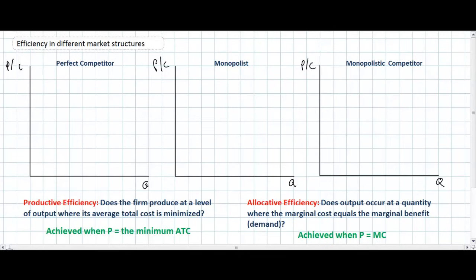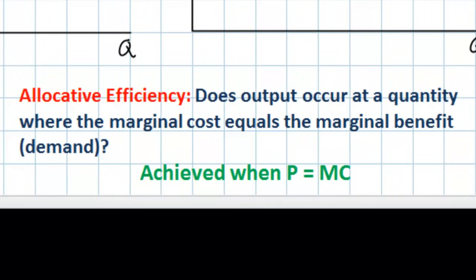The second type of efficiency is known as allocative efficiency. Allocative efficiency relates to the quantity of output in the industry and whether or not it is the socially optimal quantity. From previous units we learned that socially optimal quantity is achieved when equilibrium output occurs at the intersection of marginal cost and marginal benefit. On a firm diagram, demand represents the marginal benefit consumers receive from the good, so we determine allocative efficiency by checking whether price equals marginal cost at the quantity firms are producing.